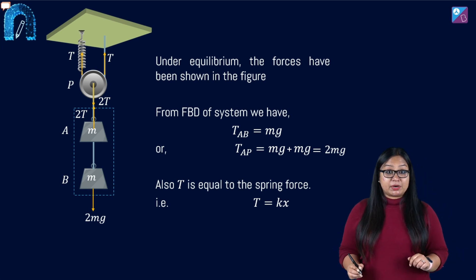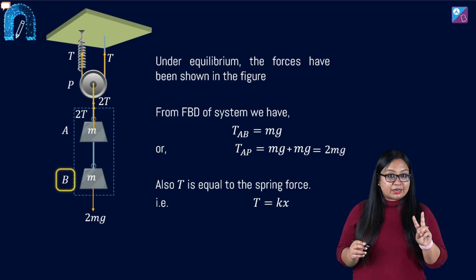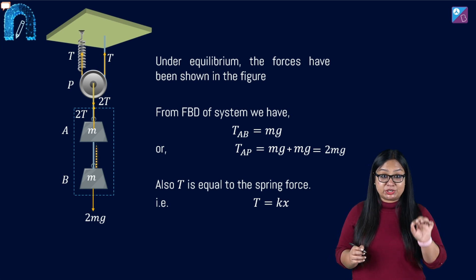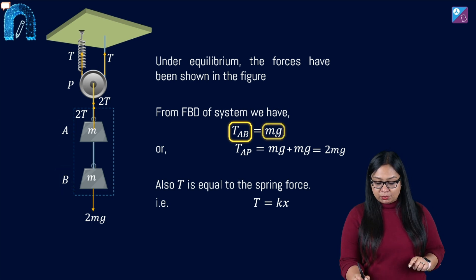I can say that under equilibrium condition, block B has two forces acting on it, vertically downwards gravitational force which will be balanced by vertically upwards the tension. So tension in the string AB will be equal to MG.